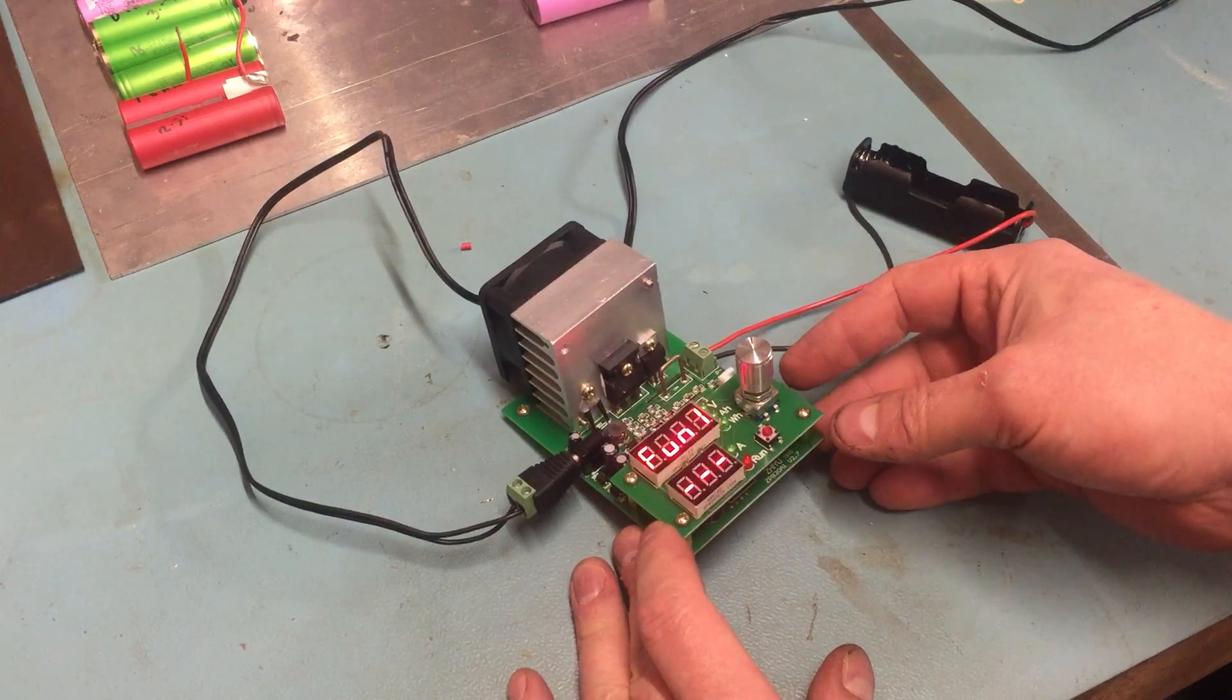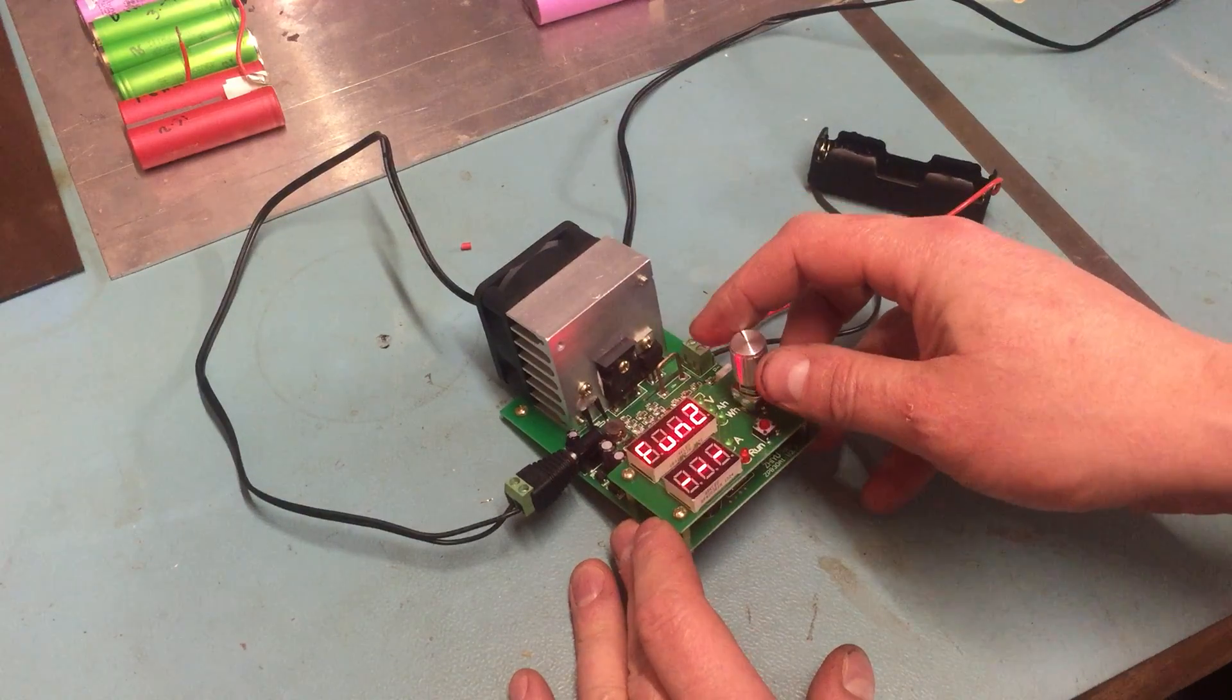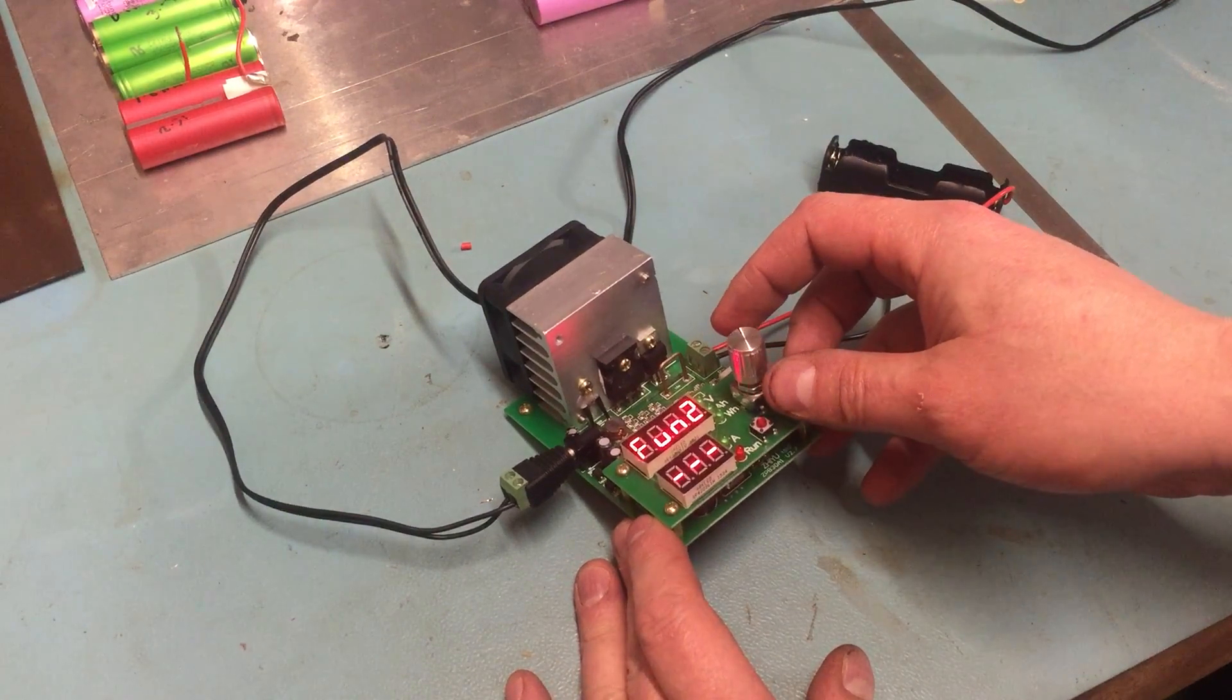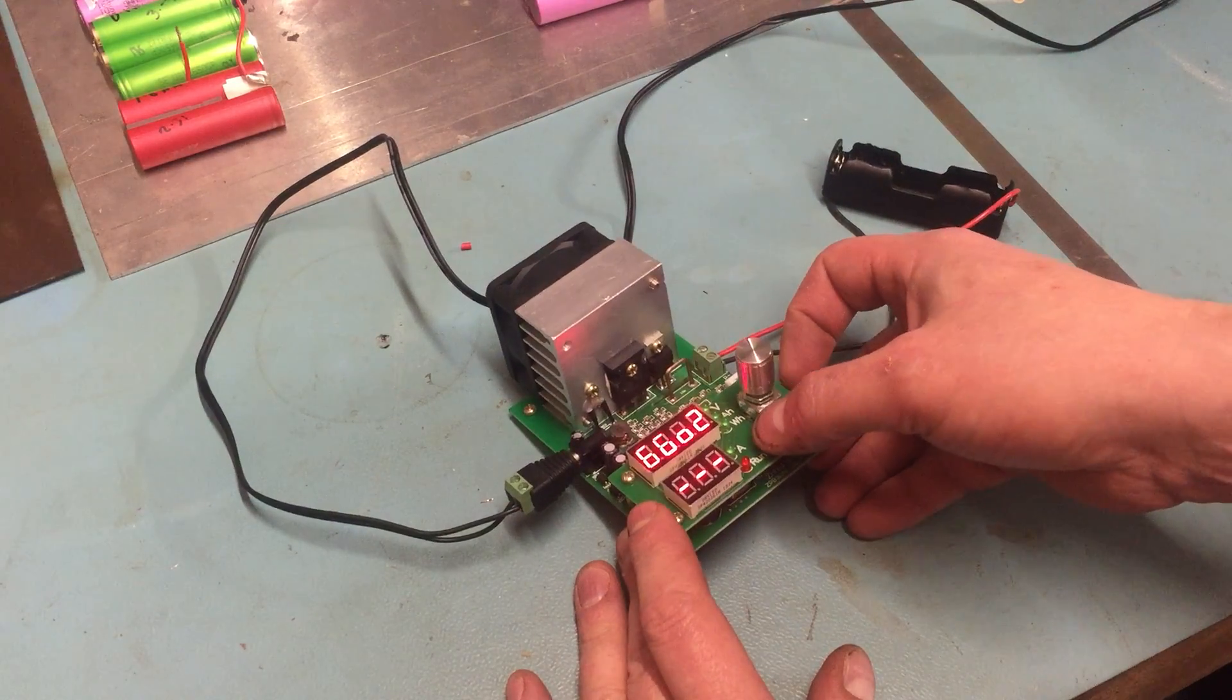It says function one or fun two. Function one is just a constant current load. Function two is battery tester mode. Press the run button.